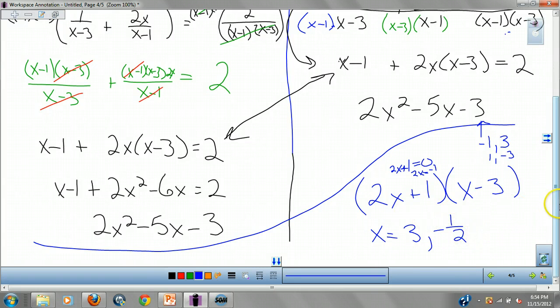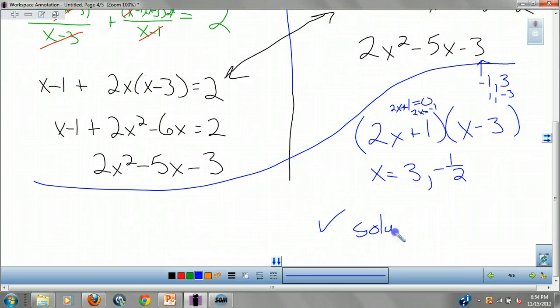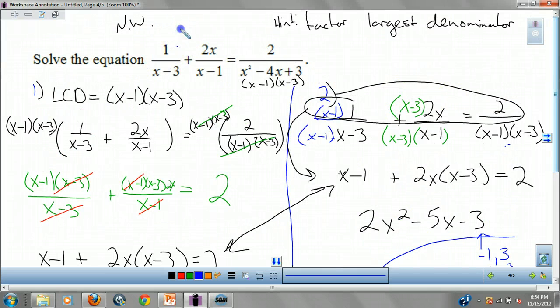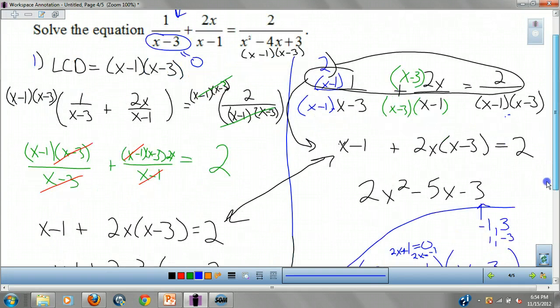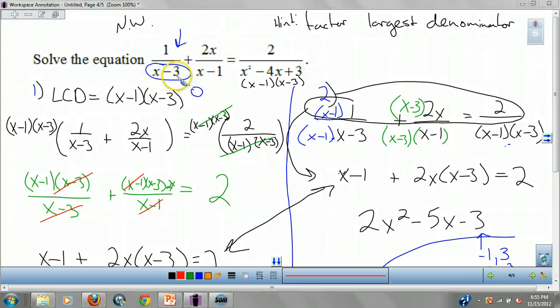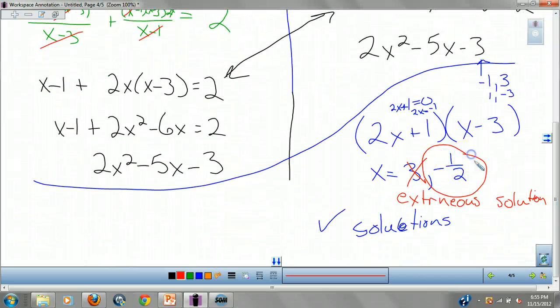So we're almost done. Now we have to check our solutions to see if they're extraneous. So we have to check solutions. Now if I plug 3 into this original equation, what do I get in my denominator here? Well I get 0. And if you divide by 0, it creates a black hole and sucks the entire universe in it, and we're all doomed. No, but so 3 isn't actually a solution, it's an extraneous solution. Because when you plug it into the original equation it doesn't work. You get a 0 for your denominator. So you check these to see which ones get 0 for your denominator. Let's try negative 1/2. Negative 1/2 minus 3 isn't 0, negative 1/2 minus 1 isn't 0, negative 1/2 in here isn't 0. So this only has one solution, it has negative 1/2, because 3 is an extraneous solution.